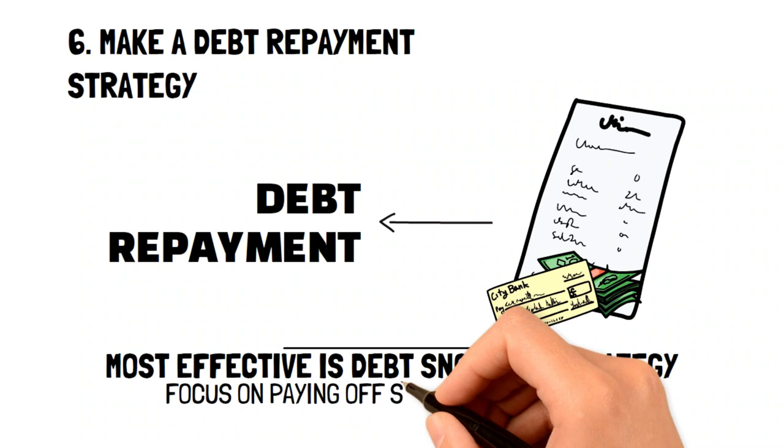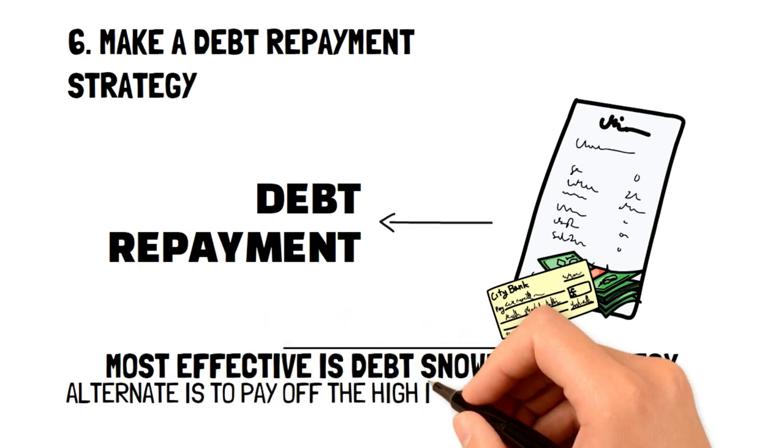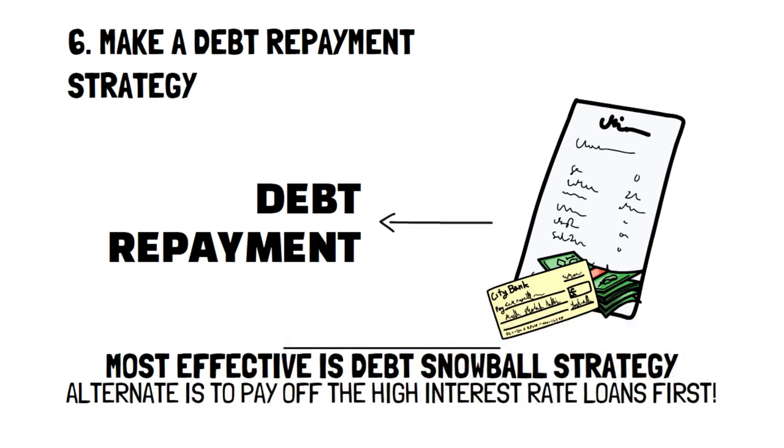Essentially, you want to focus on paying off your smallest debt first and work your way up until you are debt-free. An alternative strategy is to focus on paying your highest interest debt so that you pay less and less every single month.